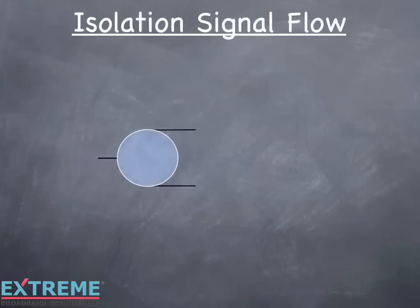There are many different isolation paths within splitters. Here we're showing a two-way splitter and its isolation path from one output port to the other. This path is bidirectional and can flow from either port.